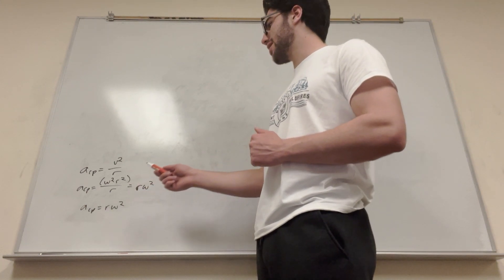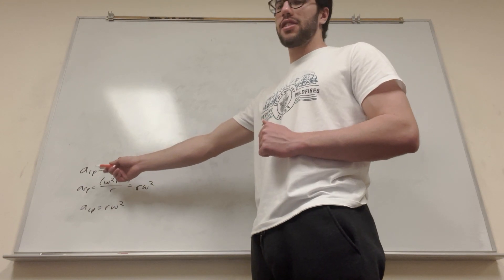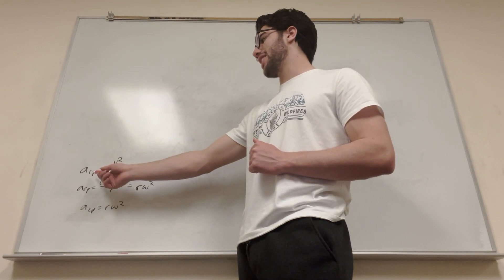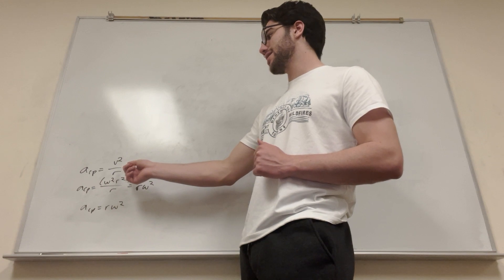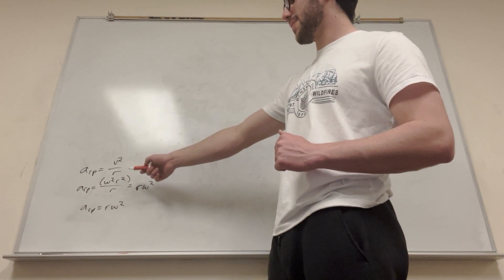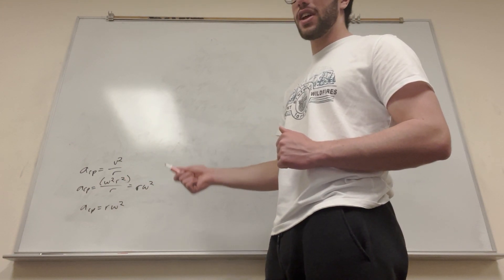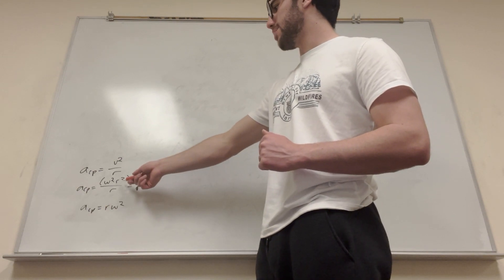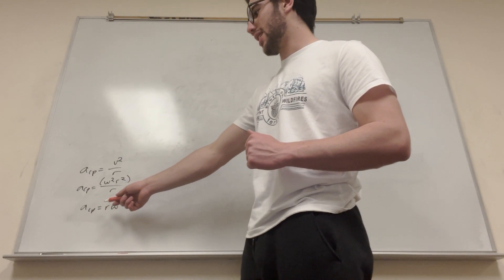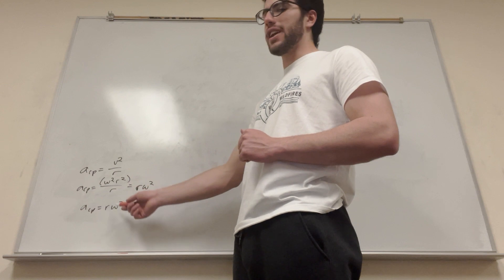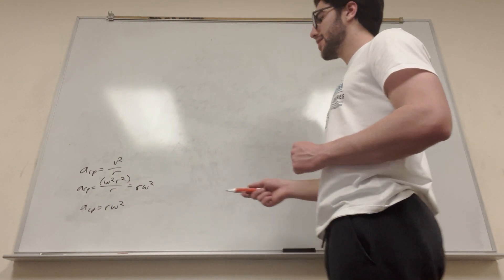To find out this formula, we remember that the centripetal acceleration is the velocity squared divided by radius. We know that velocity is equal to angular velocity times radius, so if you expand that out, you get that centripetal acceleration is the radius times angular velocity squared. So we're going to be using that.